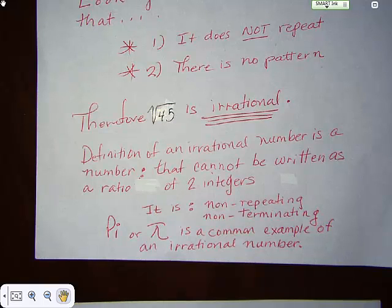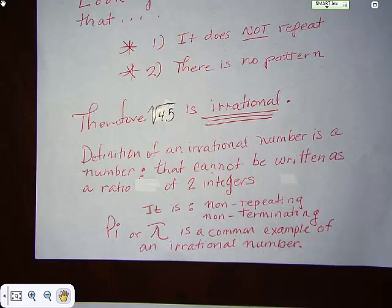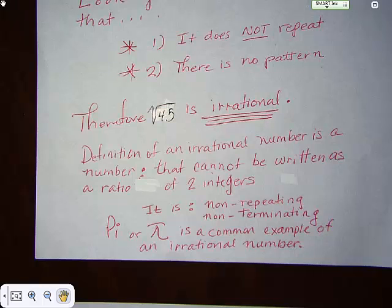There are tons more irrational numbers out there. Anytime you're trying to find a square root of a prime, you're probably looking at an irrational number — like the square root of 2, square root of 3, square root of 5, square root of 7, square root of 11. You can figure that out by checking on your calculator: if it gives you a number that does not repeat, does not terminate, and goes on and on, that's probably an irrational number.